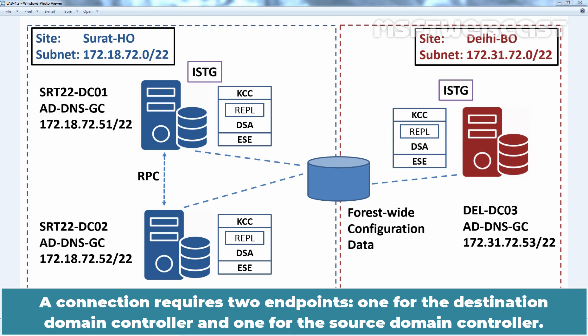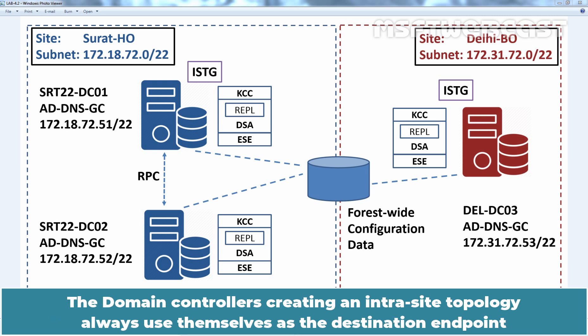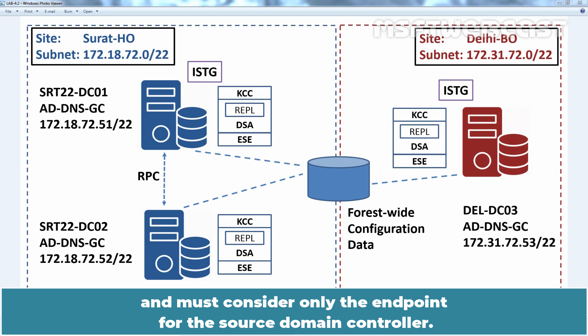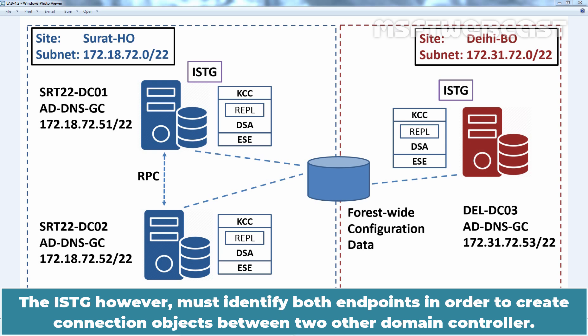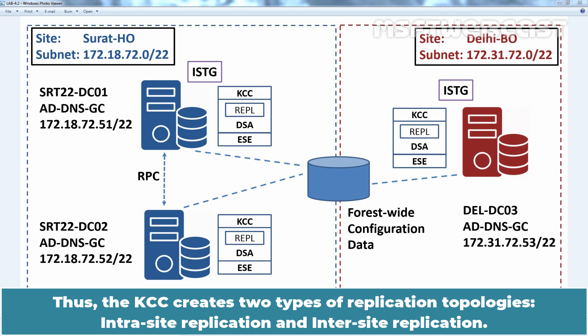A connection requires two endpoints: one for the destination domain controller and one for the source domain controller. The domain controllers creating an intrasite topology always use themselves as the destination endpoint and must consider only the endpoint for the source domain controller. The ISTG, however, must identify both endpoints in order to create connection objects between two other domain controllers. Thus, the KCC creates two types of replication topologies: intrasite replication and intersite replication.